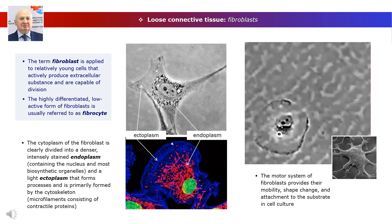The term fibroblast is applied to relatively young cells that actively produce extracellular substance and are capable of division. The highly differentiated, low-active form of fibroblasts is usually referred to as fibrocyte. Mature fibroblasts are cells about 20 micrometers in size, with a spindle-shaped, often star-shaped, light-colored nucleus with one or two nucleoli, and weakly basophilic cytoplasm. The cytoplasm is divided into a denser endoplasm containing the nucleus and most biosynthetic organelles, and a light ectoplasm that forms processes and is primarily composed of cytoskeleton microfilaments consisting of contractile proteins like actin and myosin.